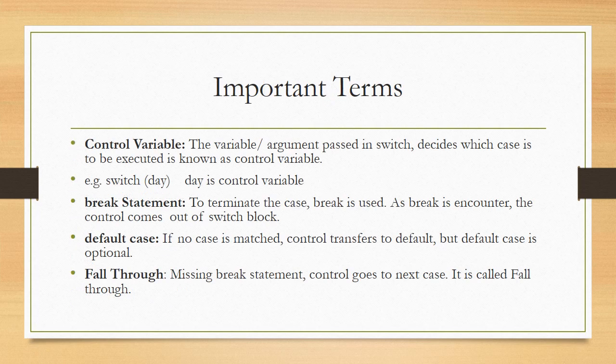Some important terms: number one, control variable — the variable or argument passed in switch that decides which case is to be executed. Number two, break statement — used to terminate the case; when break is encountered, control comes out of the switch. Number three, default case — if no case is matched, control transfers to default, but default is optional. Number four, fall-through — if a break statement is missing, control goes to the next case, which is called fall-through.